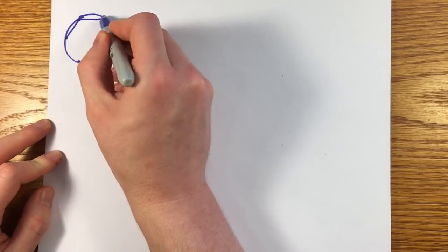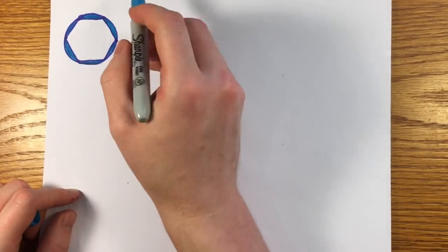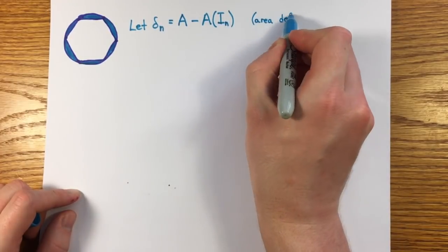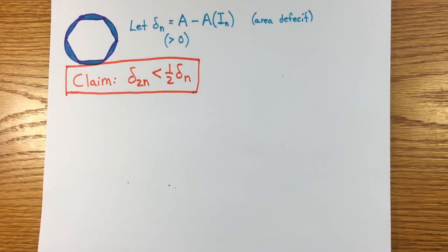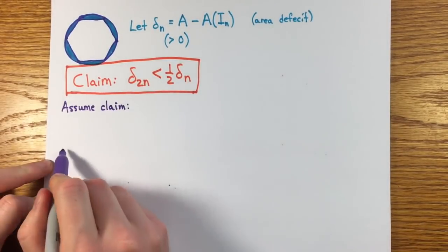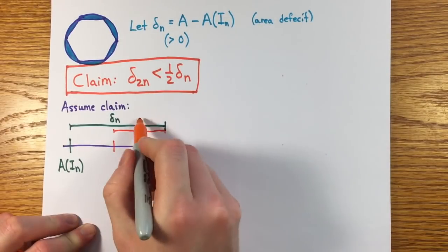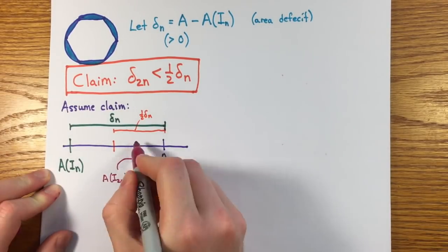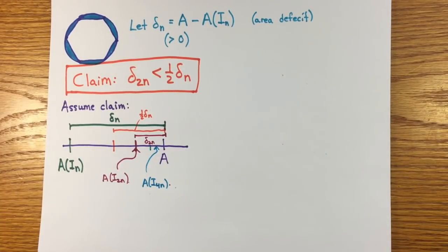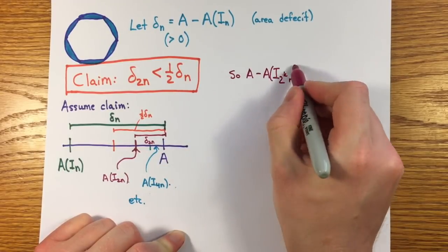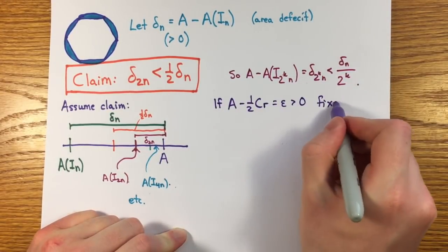So I'm going to let delta n be the difference between the area of the circle A and A of i n or the excess area. Archimedes showed that when you take twice the number of sides, delta 2 n is less than half of delta n. That way, whatever delta n you start with, by successively taking midpoints and doubling the number of sides a finite number of times, the resulting difference is sure to be less than the value epsilon fixed at the start.